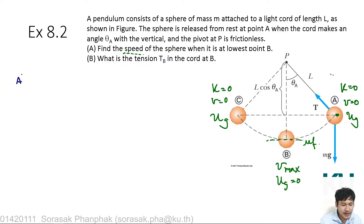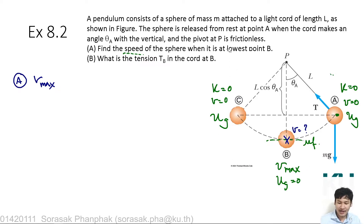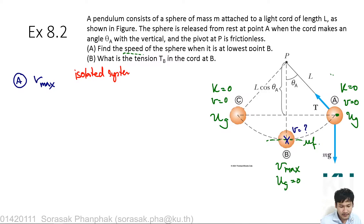If you would like to determine the speed from A to B — what is the speed at point B? This is v_max. Look at this as an isolated system if you consider the ball and the Earth interaction. If you look at only the ball, it can be a non-isolated system. However, I prefer to treat it as an isolated system because it is easier in terms of calculation. So if it is isolated, sigma E from A equals sigma E from B.